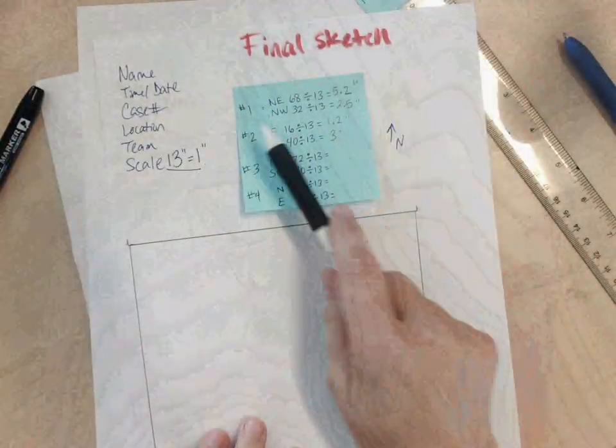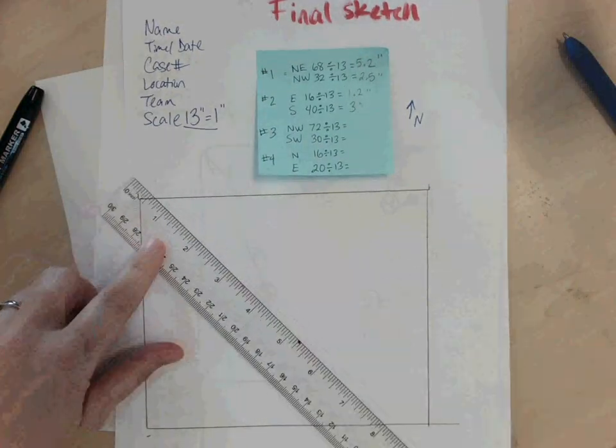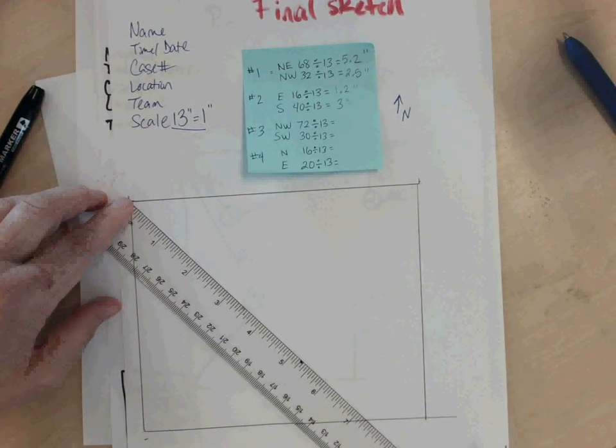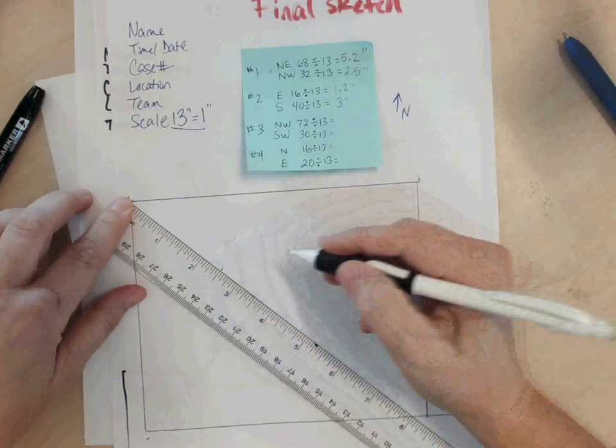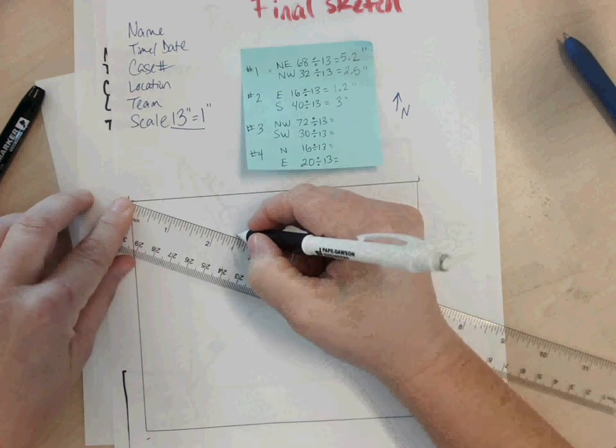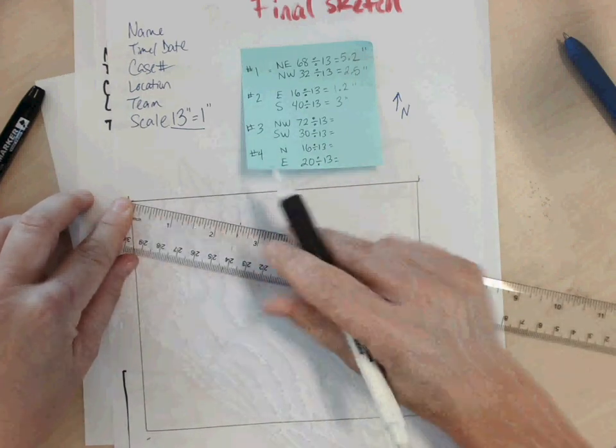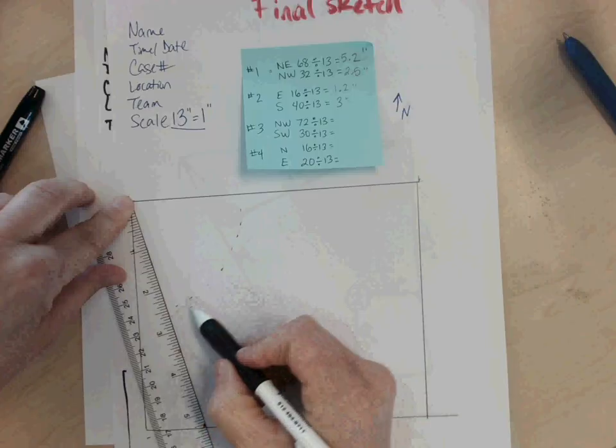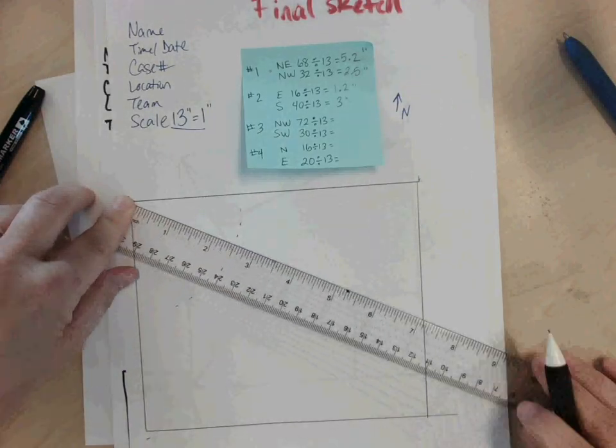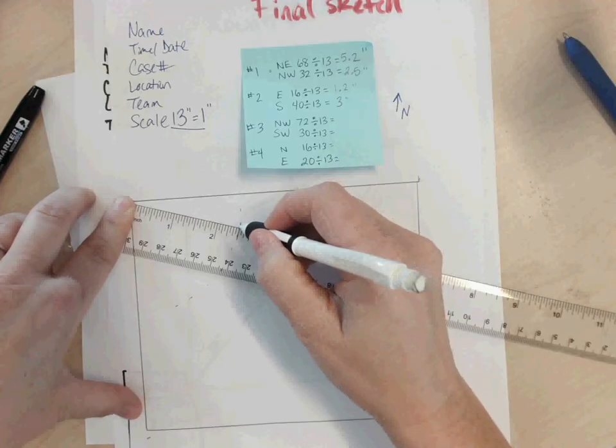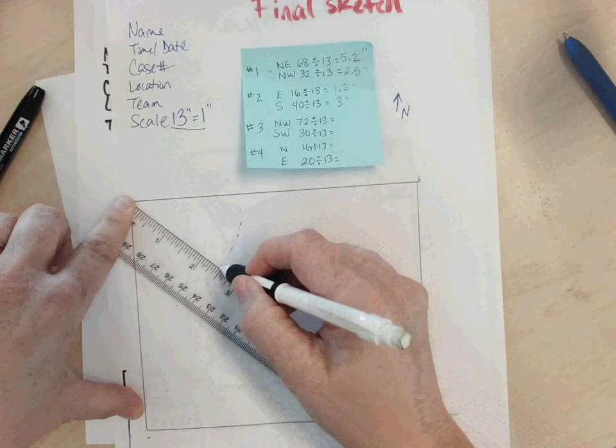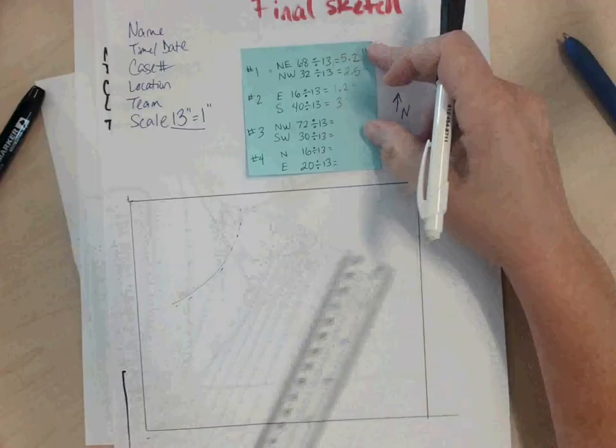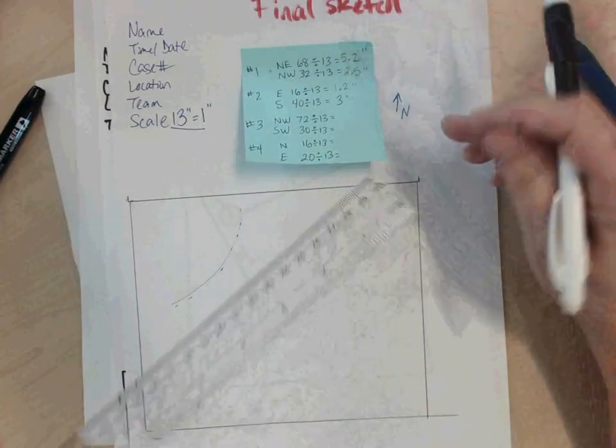So on my final sketch, I need to place number 1 evidence. So I need to take my ruler and my pencil. I'll go with the northwest corner, which was 2.5 inches. I'm going to put the 0 at the corner, and I'm going to put a dot at 2.5. But 2.5 can fall in various places. So if I move the ruler around, all keeping the 0 intact at the corner, you'll notice that it creates a bit of an arc. So you can make single little dash lines like that, indicating somewhere along that line is my evidence. You can also take your pencil, put it on 2.5, and lightly drag it, keeping the 0 in place, so that you create this arc. I'm going to do the same thing with the other side. 68 inches divided by 13 gives me 5.2. That's from the northeast corner.